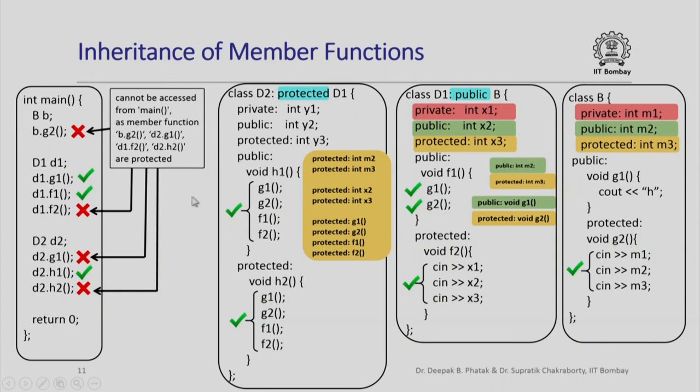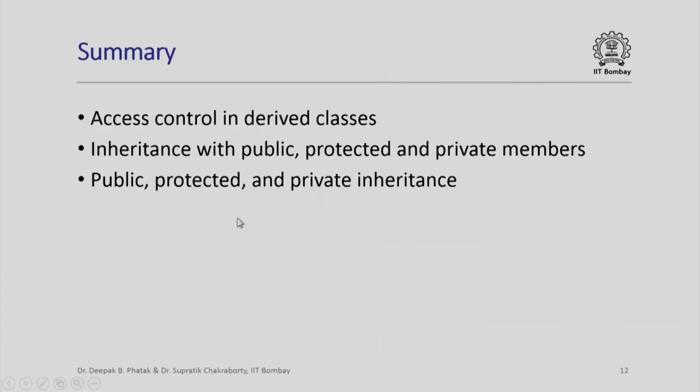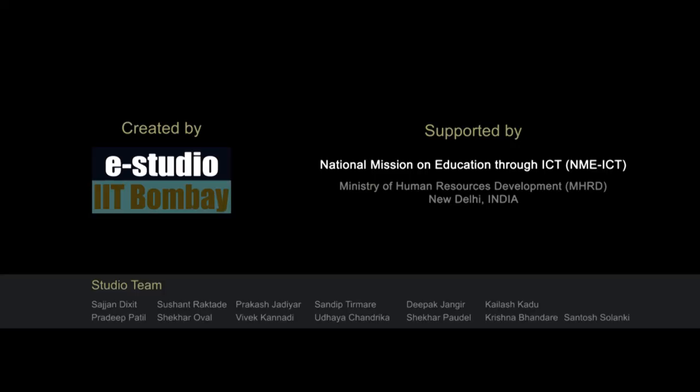The combination of derivation modes and access control specifications of data members and member functions determines which member functions can be called from where — what can be called from the main function, what can be called from within a derived class. To summarize: we looked at different access control mechanisms in derived classes, saw how to inherit public, protected, and private members, and how public, protected, and private inheritance interact with those specifications to determine access within derived classes. Thank you for your attention.